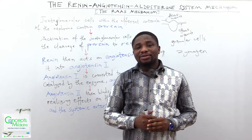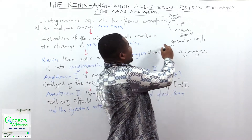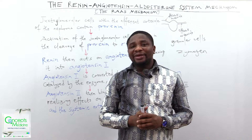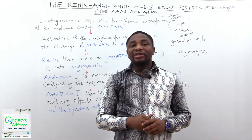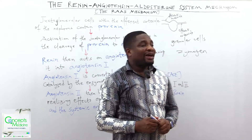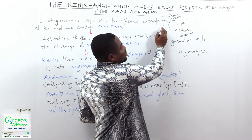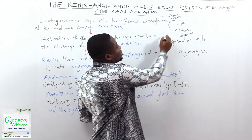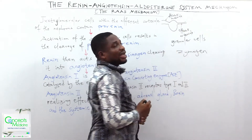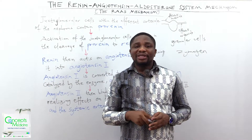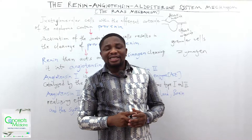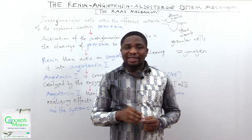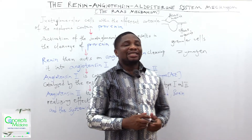The juxtaglomerular cells, also referred to as the granular cells within the afferent arteriole of the nephron, contain pro-renin. The afferent arteriole is illustrated here. Pro-renin is secreted constitutively in its inactive form, and once it is in its inactive form, we refer to that as zymogen.